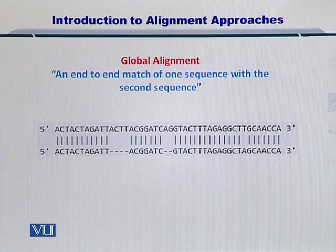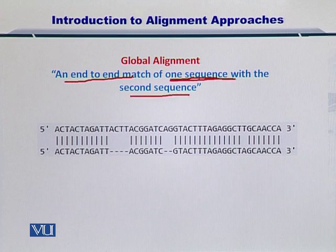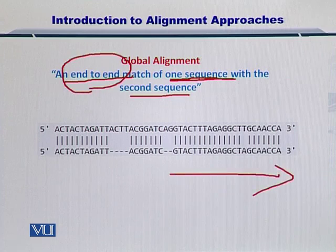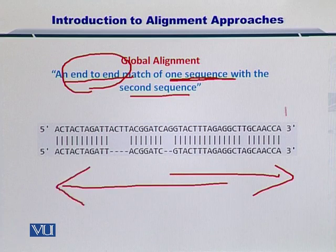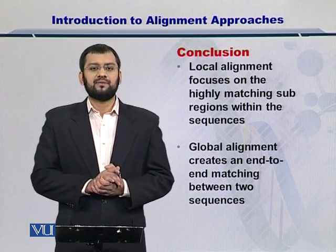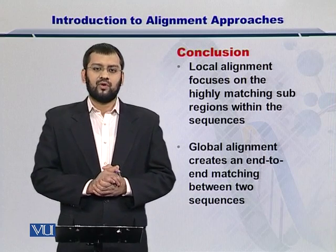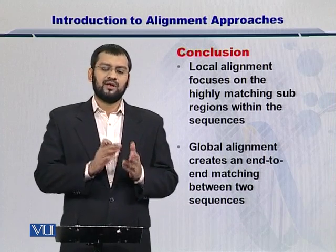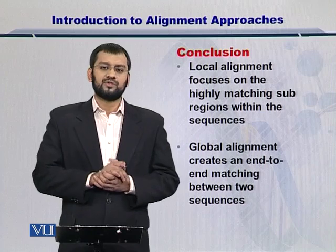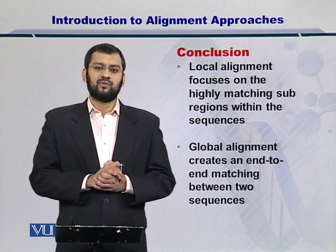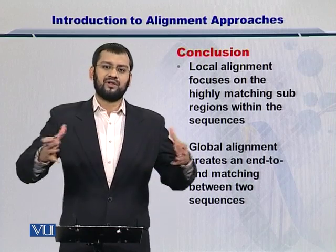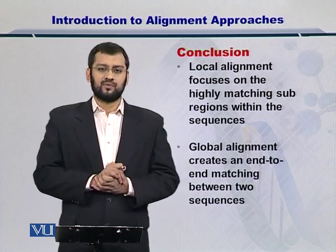So what I have done is created an end-to-end match of one sequence with the second sequence, by stretching the shorter sequence so that the start and end of both sequences are the same. In conclusion, local alignment focuses on specific matching regions between the longer and the shorter sequence, while global alignment focuses on the overall end-to-end match between the two sequences.